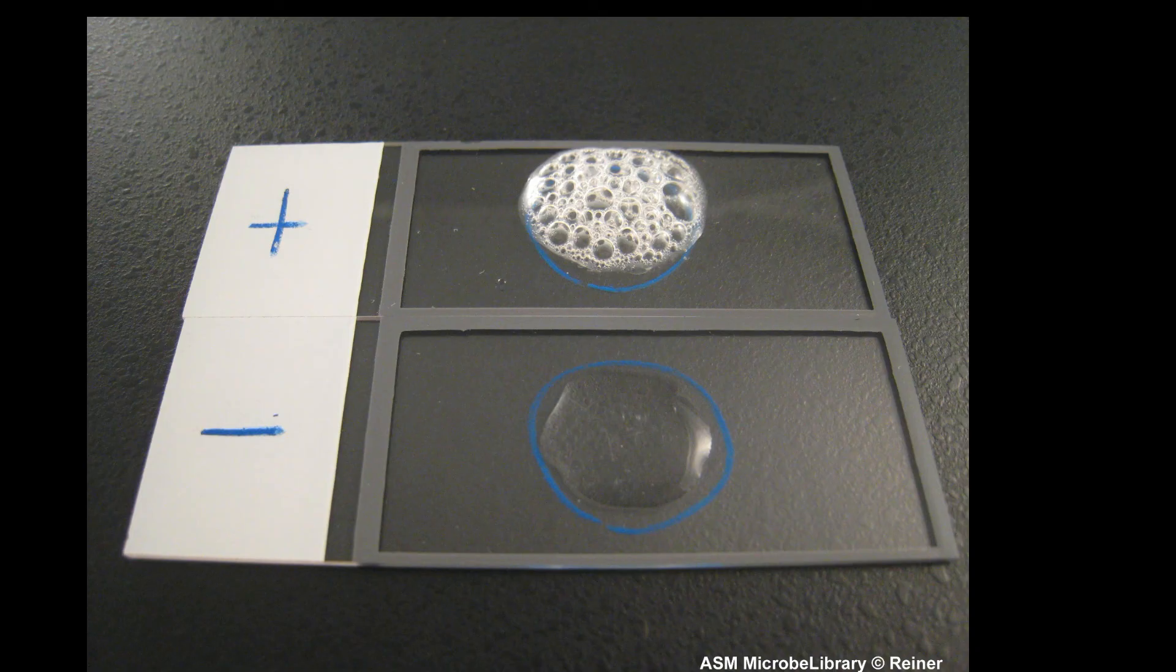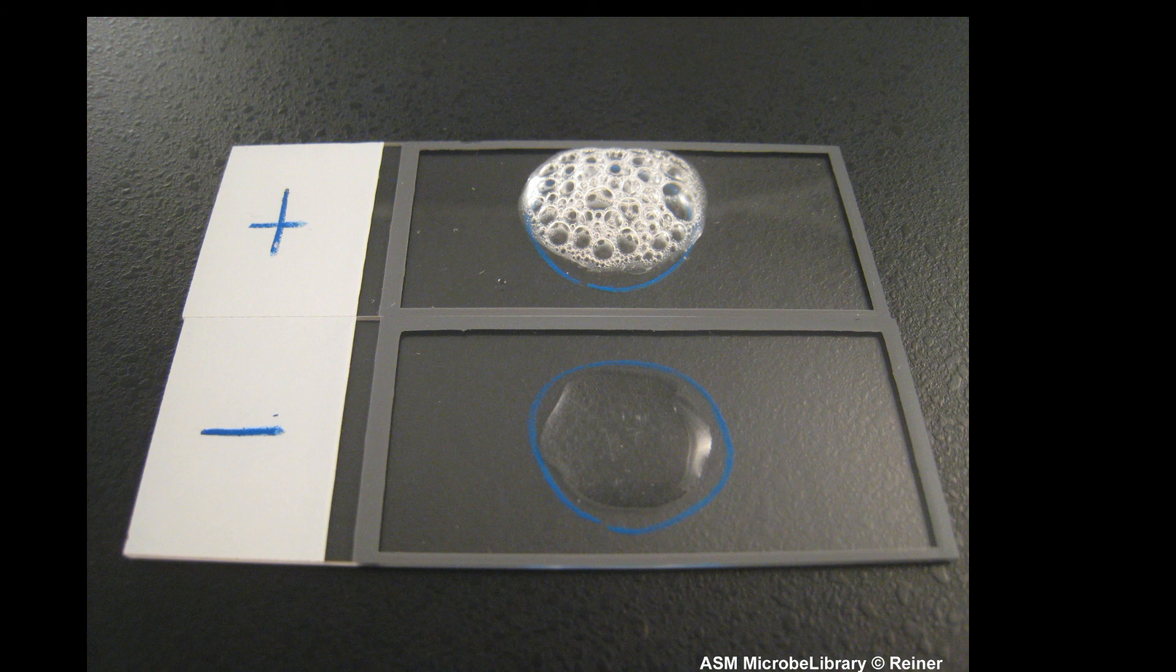In the catalase test, hydrogen peroxide is added to bacteria. If the bacteria produce the catalase enzyme, the hydrogen peroxide will be converted to water and oxygen. The oxygen will be seen as bubbles.